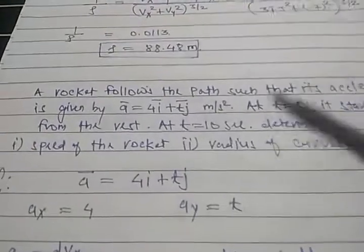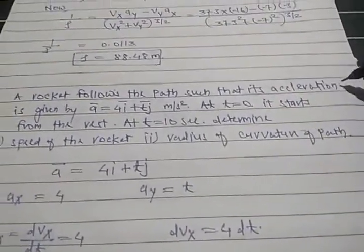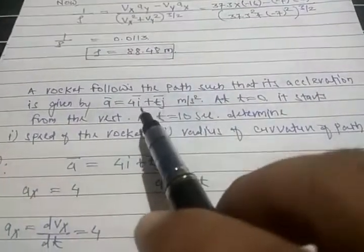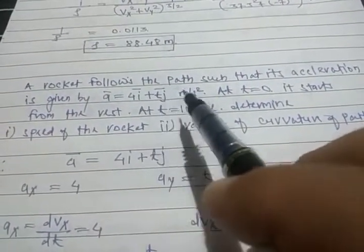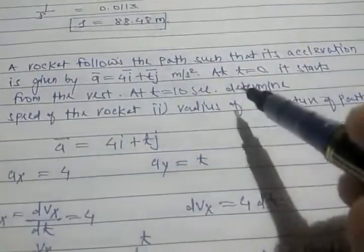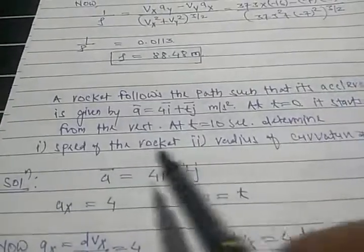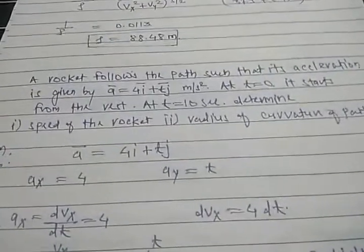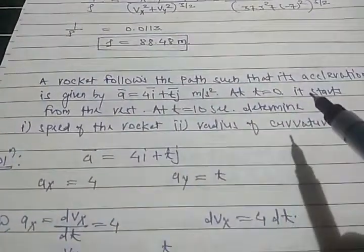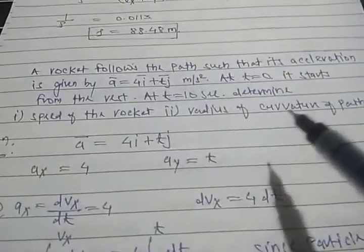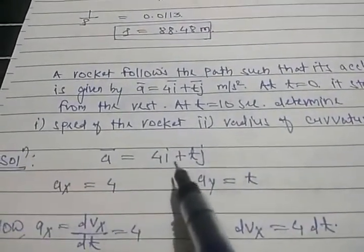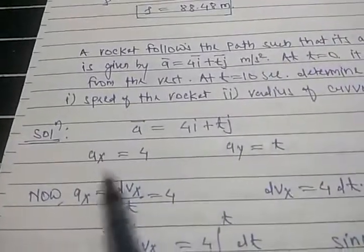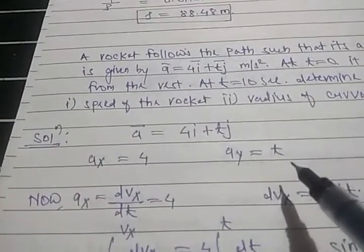Let us do one more example. A rocket follows a path such that its acceleration is given by a-vector equals 4i + tj meters per second squared. At t equals 0, it starts from rest, and at t equals 10 seconds, determine the speed of the rocket and radius of curvature. So ax equals 4 and ay equals t.